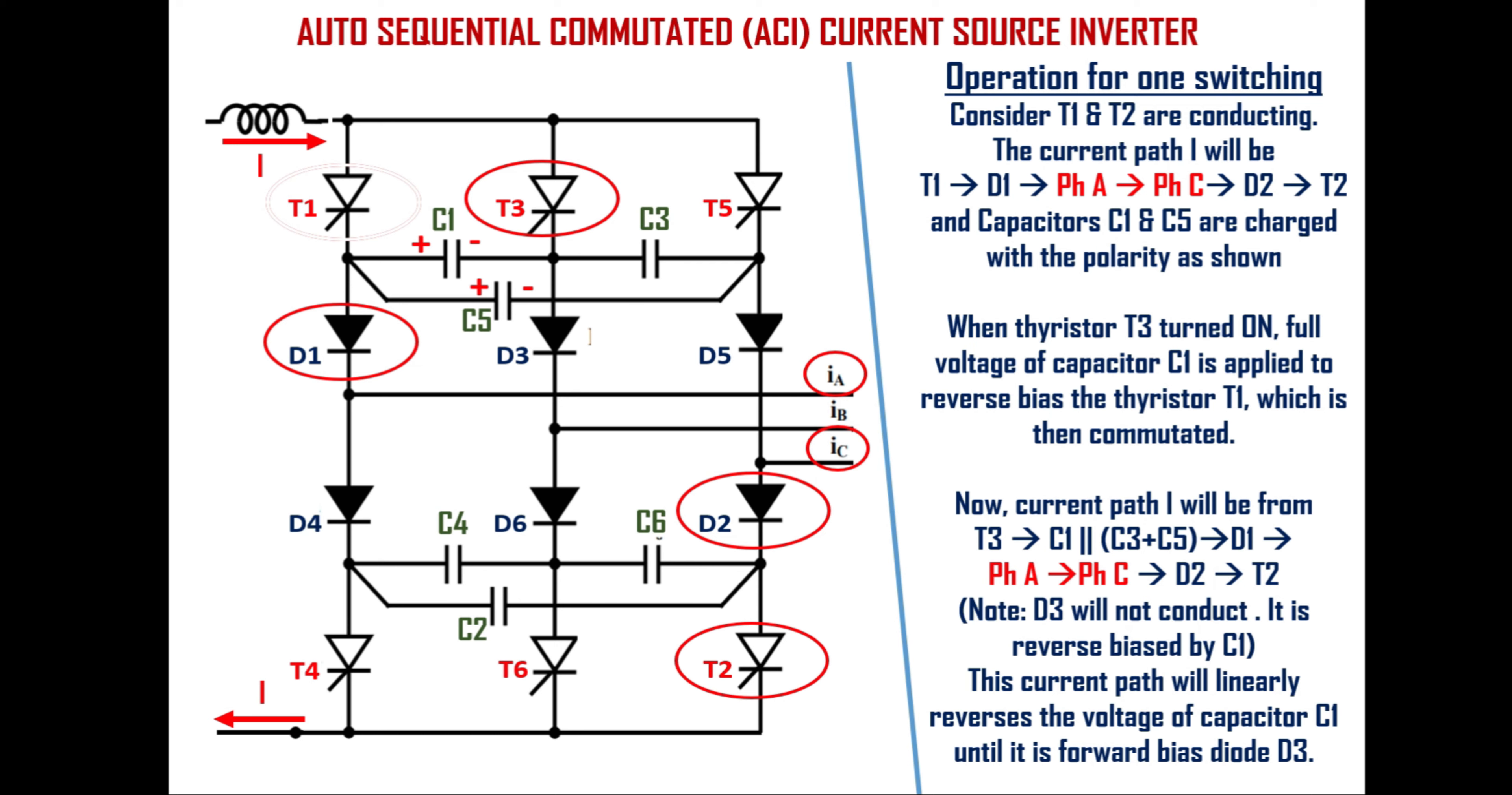Note that the phase current here is not changed and still it is from phase A to phase C. This is because diode D3 is not conducting and it is reverse biased by capacitor C1 but the current now passing through the parallel combination of C1 and C3 and C5 in series linearly reverses the voltage of capacitor C1 until it is sufficient to forward bias the diode D3.